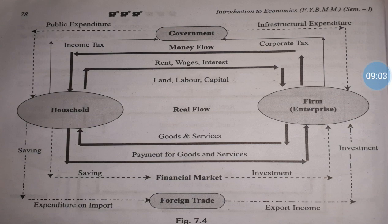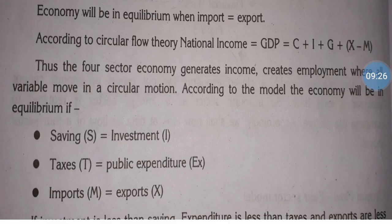That is called the four-sector model. The new addition in the four-sector model is that foreign trade takes place — import and export both occur. The economy will be in equilibrium when import and export are equal. The circulation flow of national income is represented as: C + I + G + X − M, where C means consumption, I means investment expenditure, G means government consumption expenditure, X means export, and M means import. The four-sector economy generates income, creates employment, and helps grow the economy.